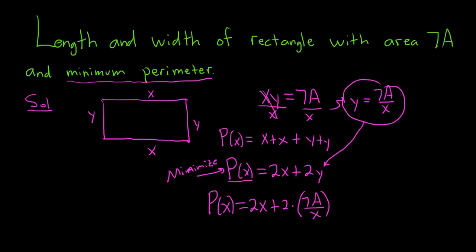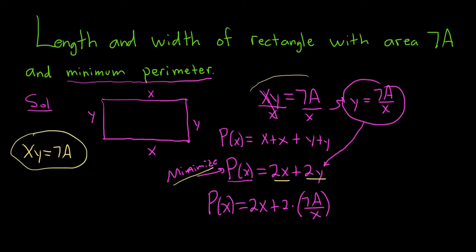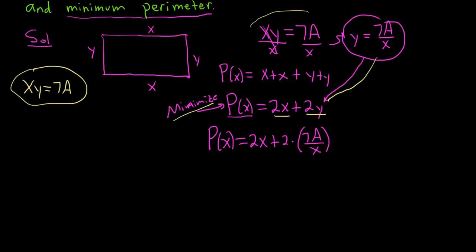Quick recap: draw the rectangle, write x times y equals 7a, write the perimeter formula, then use the constraint to solve for one variable and substitute. Cleaning up: p of x equals 2x plus 14a over x. The goal is to make p as small as possible.